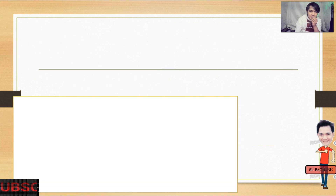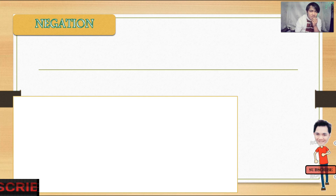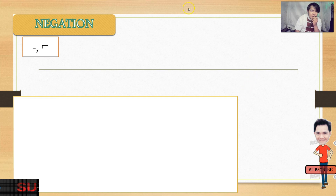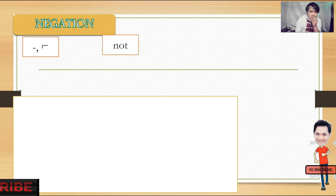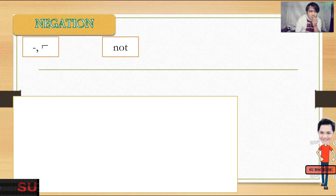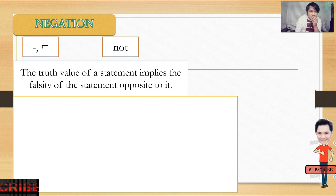Let's start with the first one: negation. From the word negate, our symbol is the negation sign. In other books or references, this is the symbol for negation. The word that we are going to use is the word 'not' to imply negation. The truth value of a statement implies the falsity of the statement opposite to it.